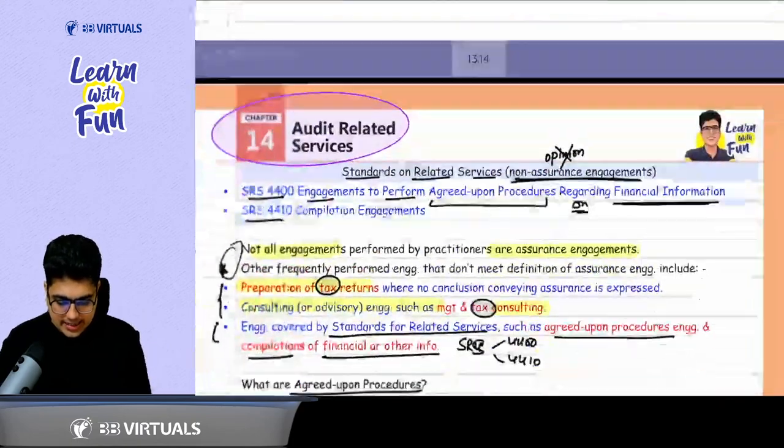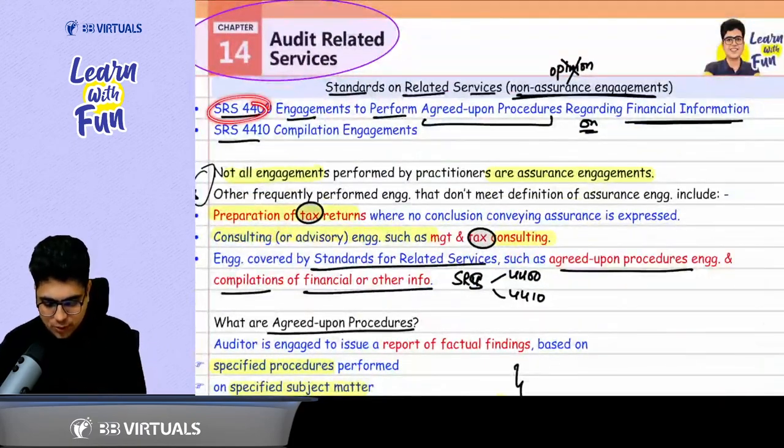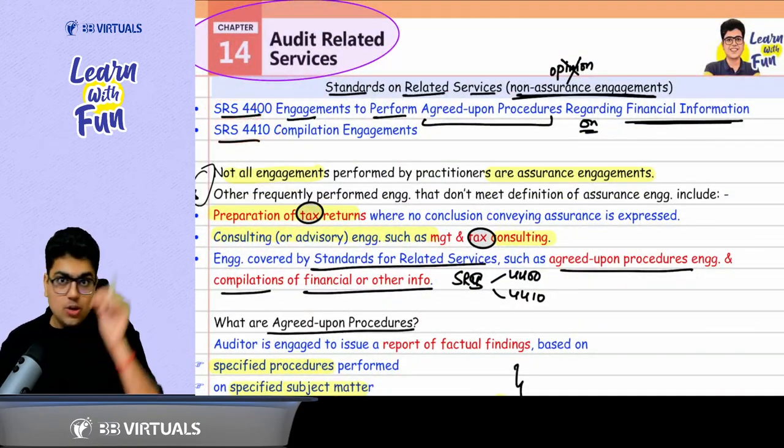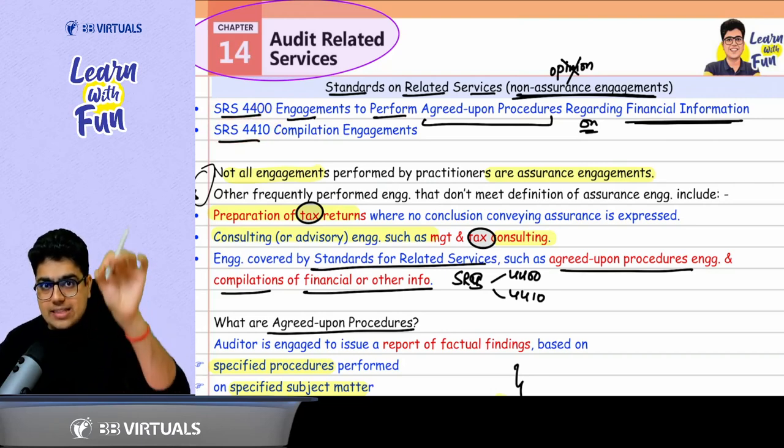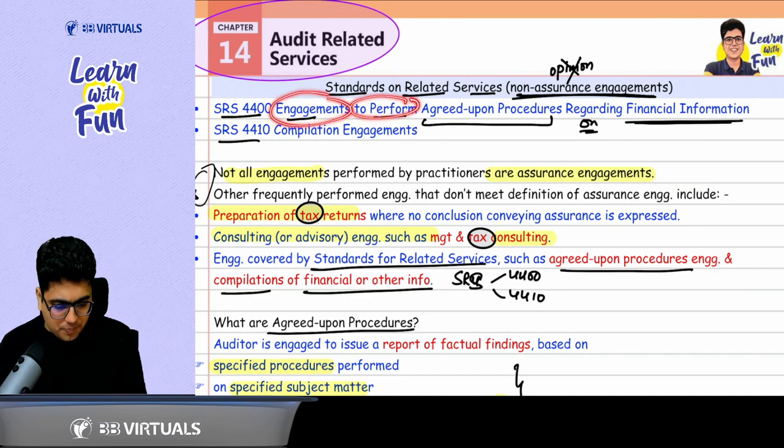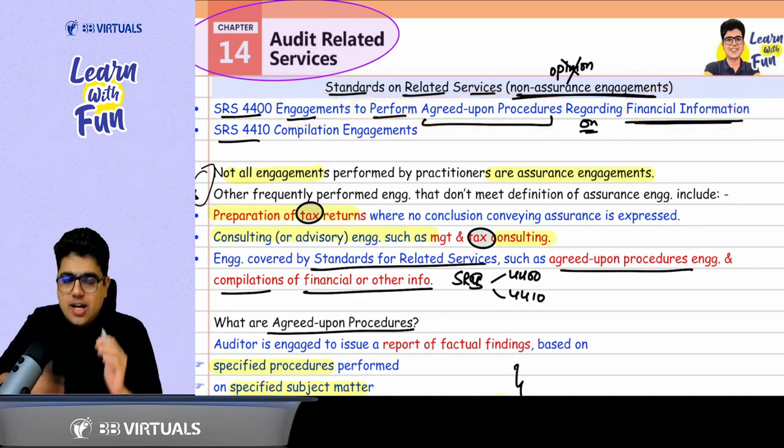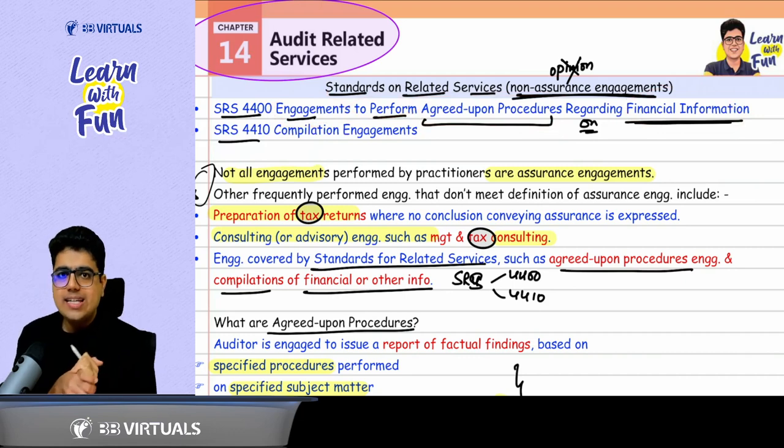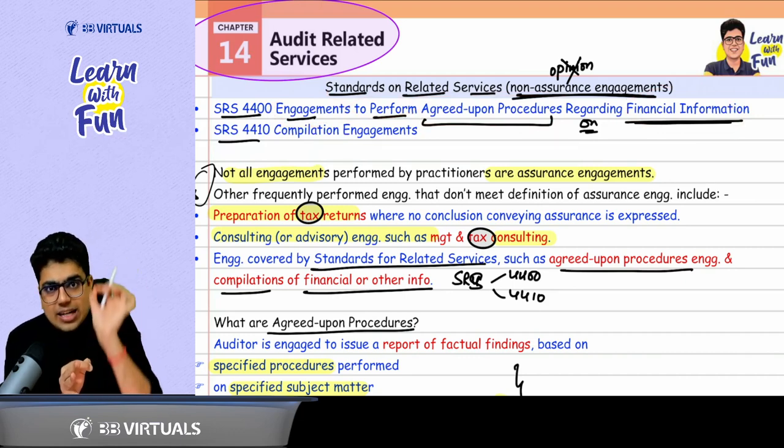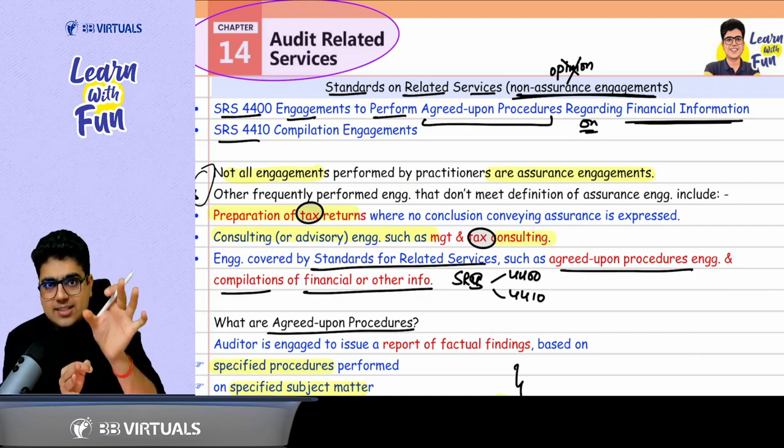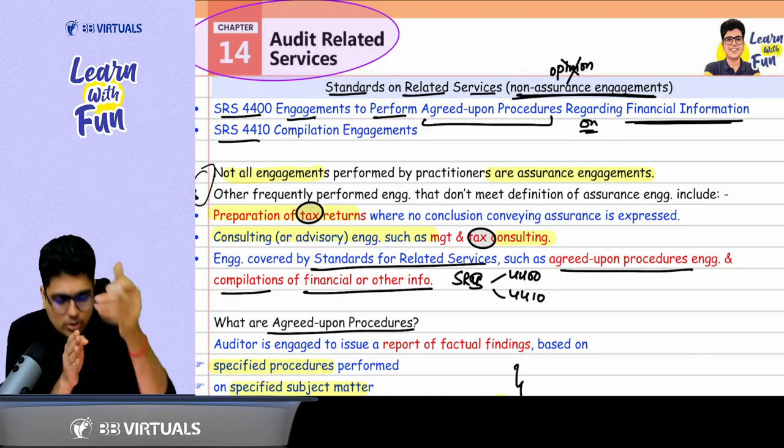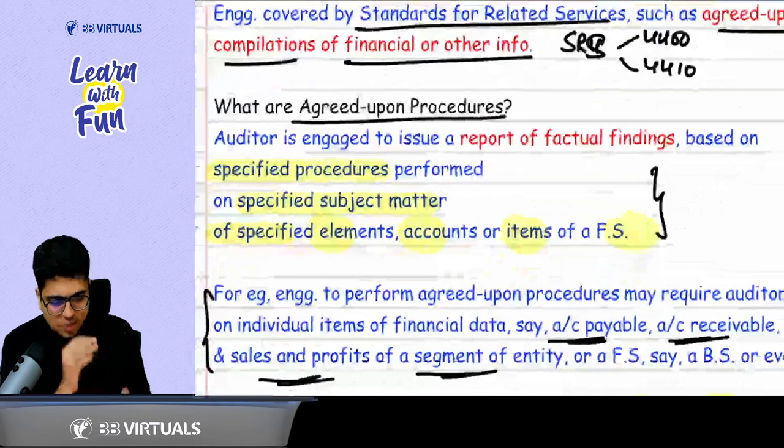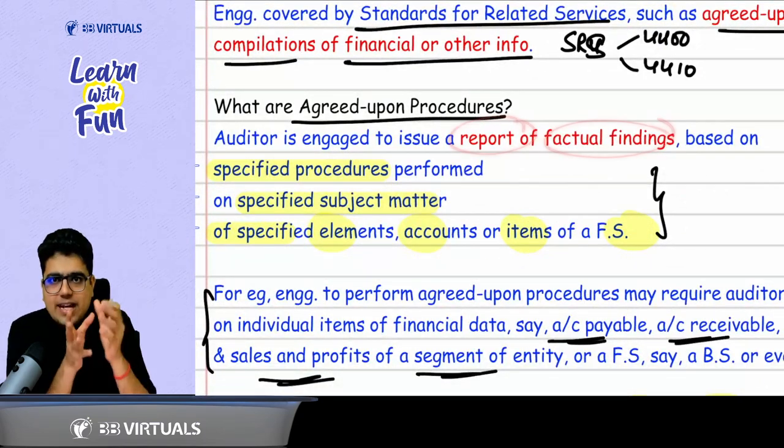In these, there are two standards: SRS 4400 and SRS 4410. Right now, we are going to revise SRS 4410, that is the engagements to perform agreed upon procedures regarding the financial information. Now the question comes, what is an agreed upon procedure? In the agreed upon procedures, you are just required to report the facts, the findings. How do I get to those facts? You have to report the factual findings, facts and findings, factual findings.